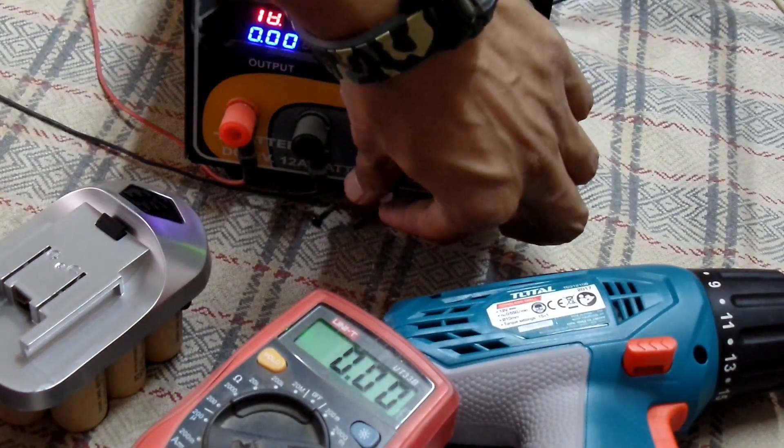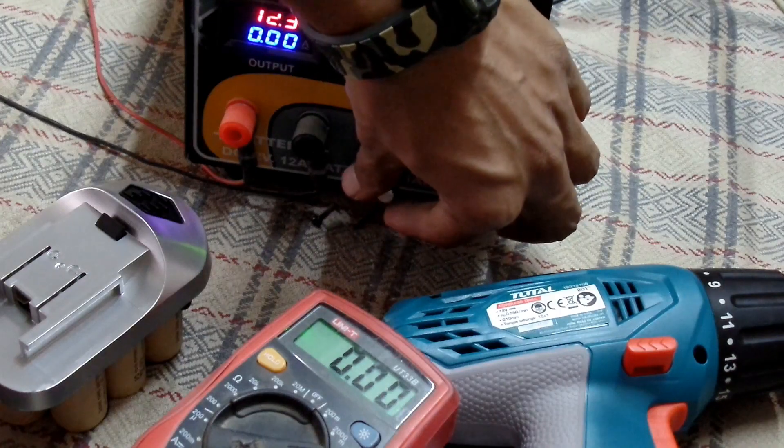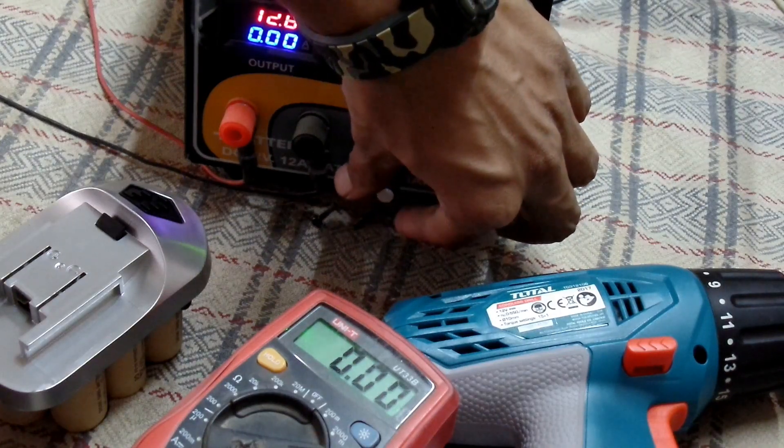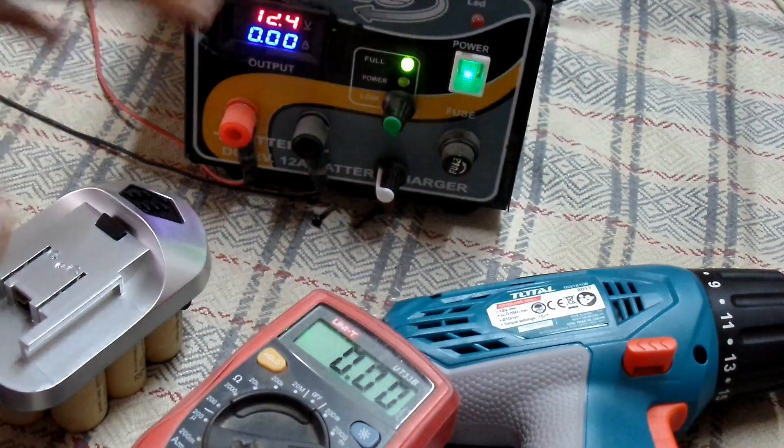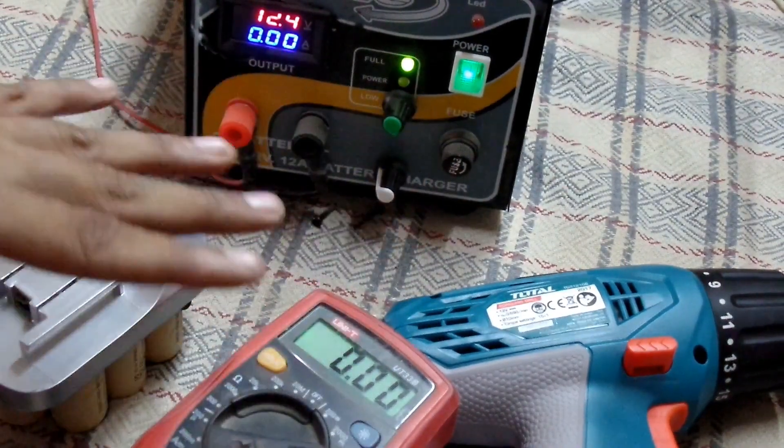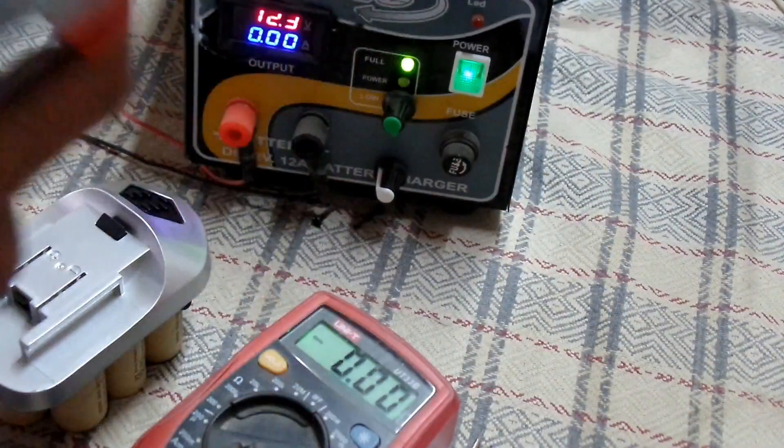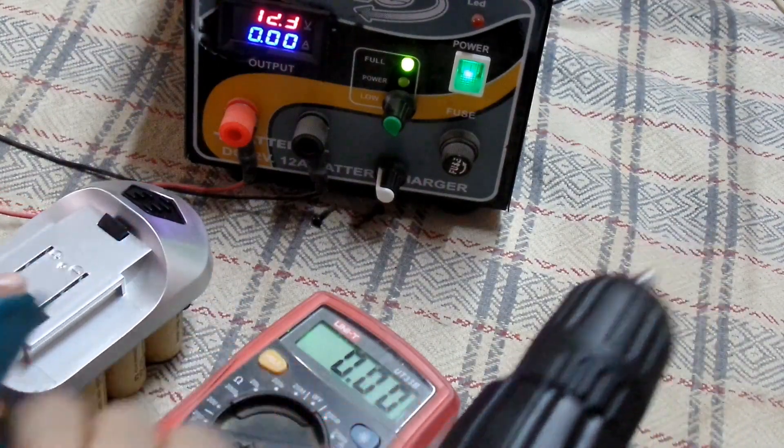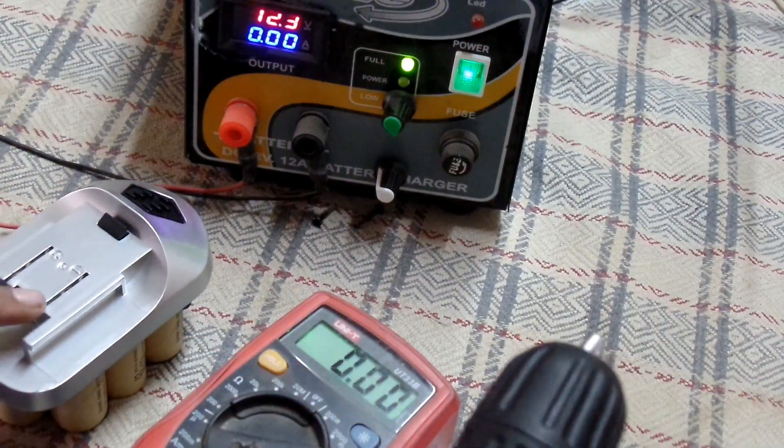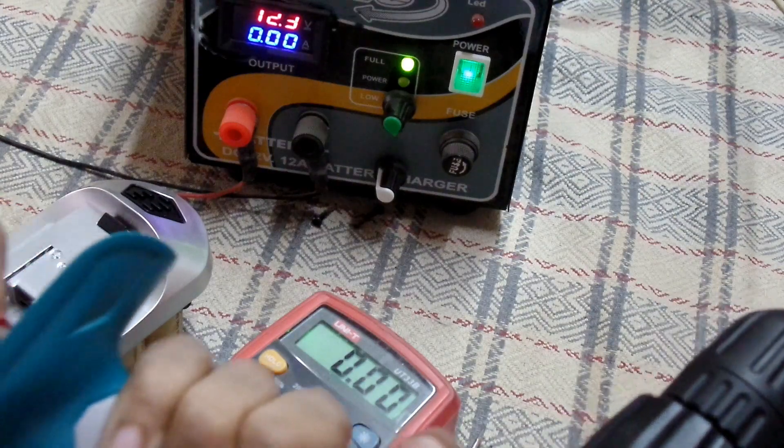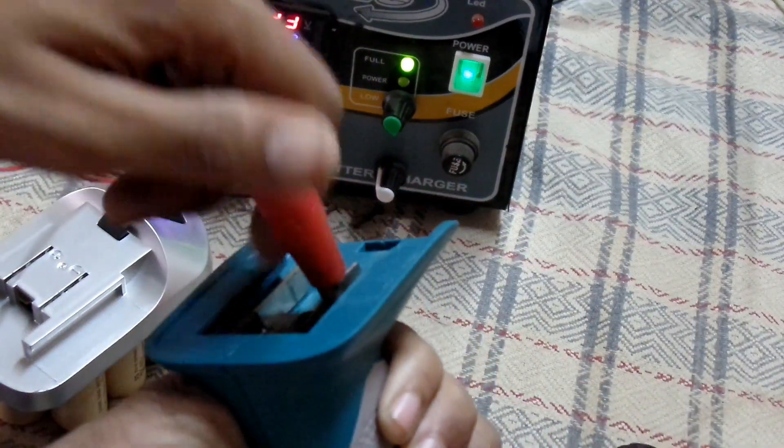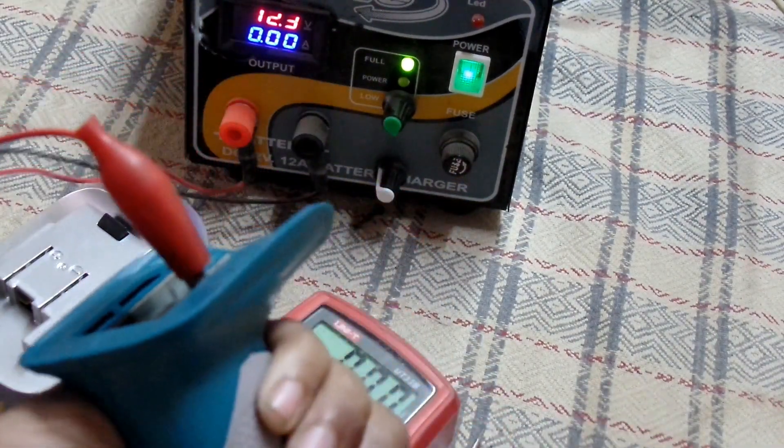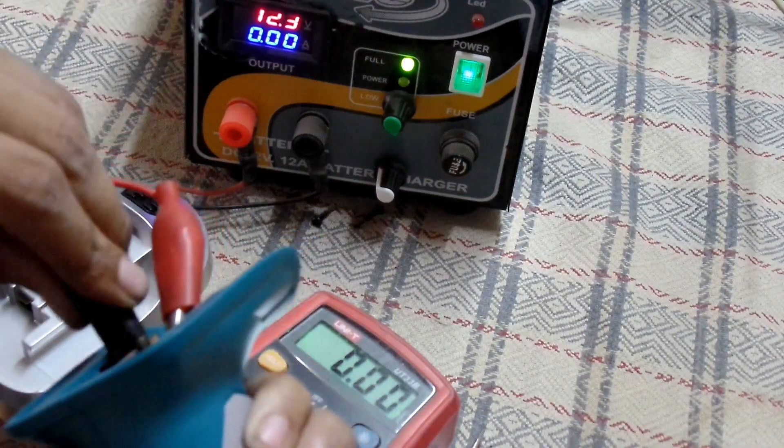Currently the voltage is 12 volts because the battery provided with this drill is 12 volts. What I'm gonna do is connect it to my power supply, then turn it on and see how much current it's taking. You can also find a tutorial on the power supply that I built on my channel.